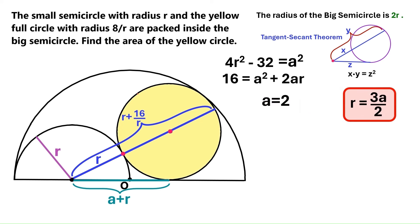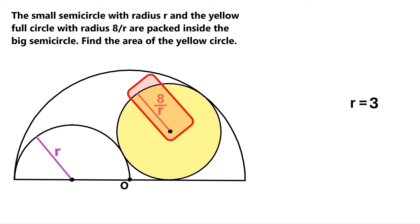Let's go to this equation and replace this a with 2. And r turns out to be 3. We know the radius of the yellow circle is 8 over r. So we'll replace this r with 3. And finally, we find the radius of the yellow circle.